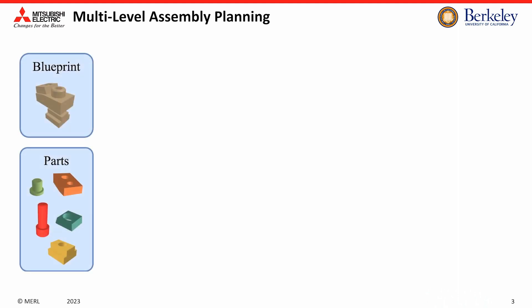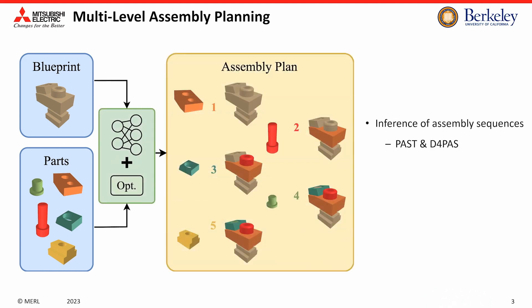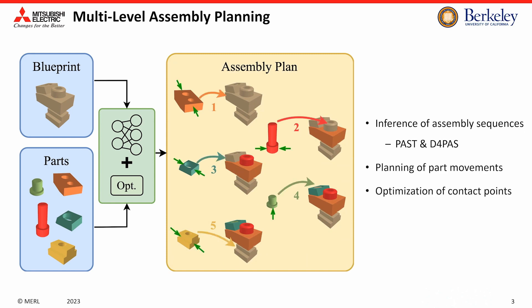To achieve successful robotic assembly, this study proposes a multi-level assembly planning framework to break down the task into three subtasks. Taking the target blueprint and separate assembly parts as input, our method infers the assembly sequence for each part, generates parts movements, and optimizes contact points.